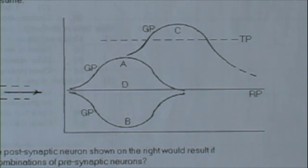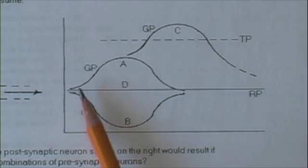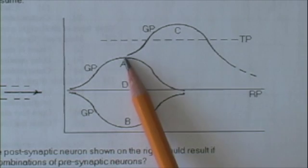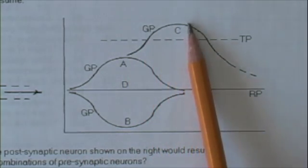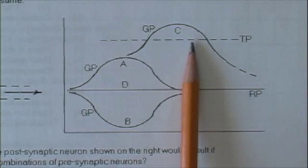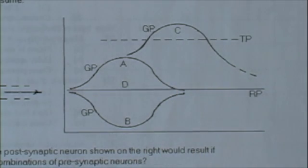What if the impulse arrives along one and two at about the same time? Both are excitatory. Number one creates a graded potential this high, number two adds to it, the graded potential is that high. Does it generate a nerve impulse? Yes, because the graded potential rises above threshold.